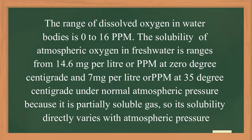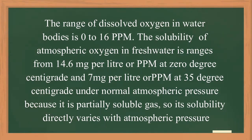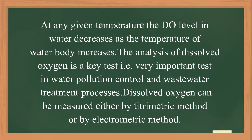The range of oxygen in water bodies is from 0 to 16 ppm, that is parts per million. The solubility of atmospheric oxygen in fresh water ranges from 14.6 mg per litre at 0 degree centigrade and 7.0 mg per litre at 35 degree centigrade under normal atmospheric condition. Because it is a freely soluble gas, its solubility directly varies with the atmospheric pressure at any given temperature.